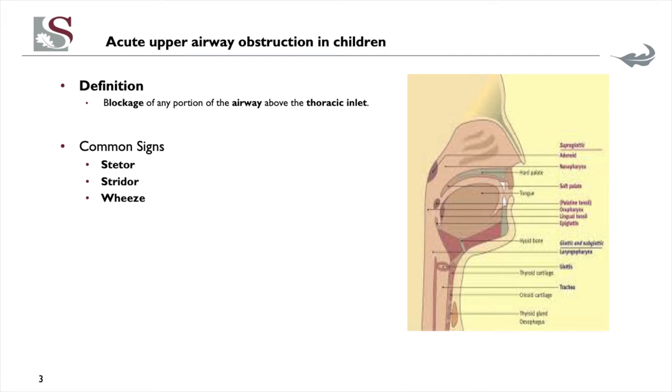We seldom are not able to delineate whether this is a stertor or a stridor. In some cases people are not able to pick up whether it's a wheeze. When we're talking about stertor, that means it must be an obstruction that's possibly supraglottic — meaning it should be along the tongue and the oropharyngeal space. Sometimes you can have obstruction there, therefore causing stridor.